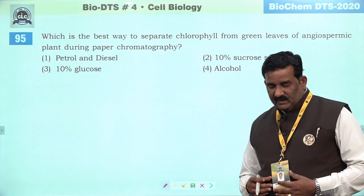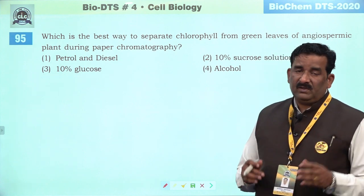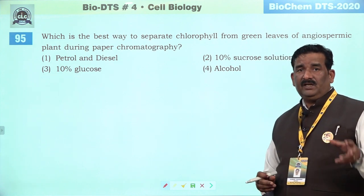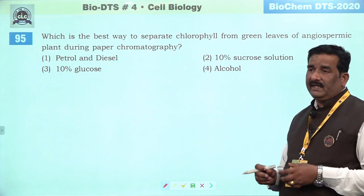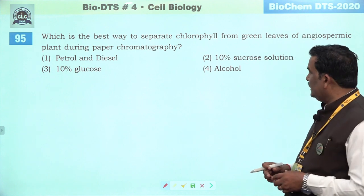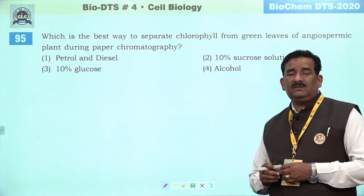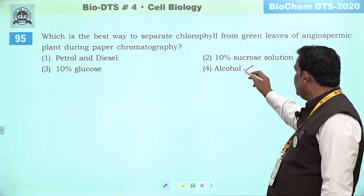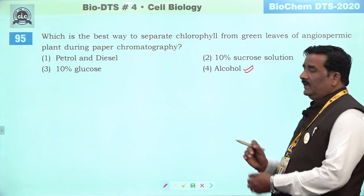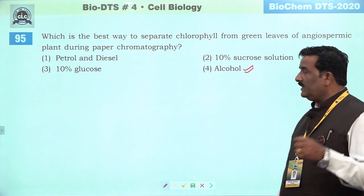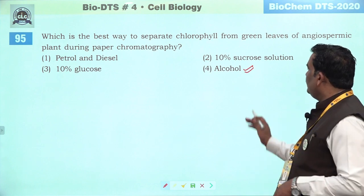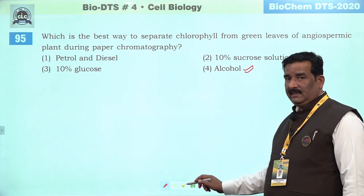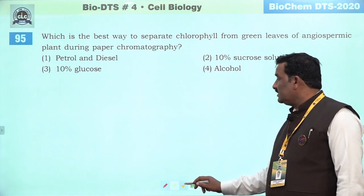Next question: yeh ek achha question hai — paper chromatography ka description NCRT mein kiya gaya hai, jahan par chlorophyll pigments ko separate kiya gaya hai. Woh organic solvent soluble hote hain — toh ismein alcohol ka use kiya jaata hai during the paper chromatography. Isliye fourth right answer banta hai — yaad rakhne ki cheez hai.